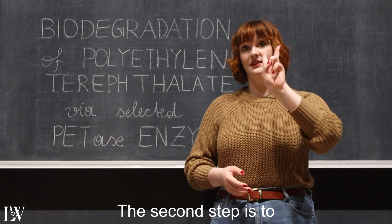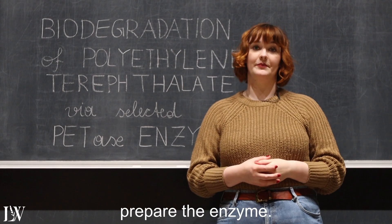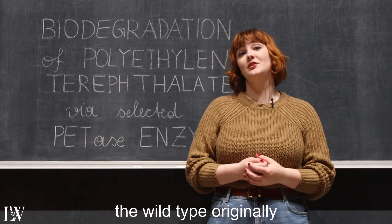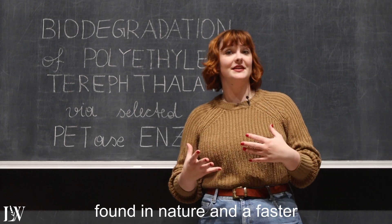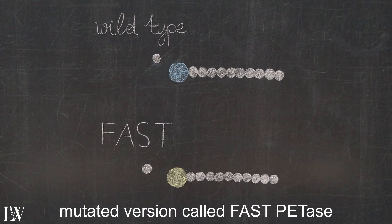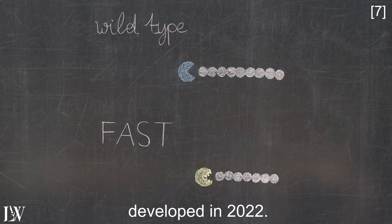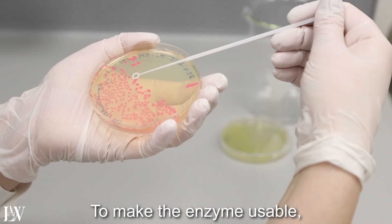The second step is to prepare the enzyme. We work with two versions of petase: the wild type, originally found in nature, and a faster mutated version called fast petase, developed in 2022.